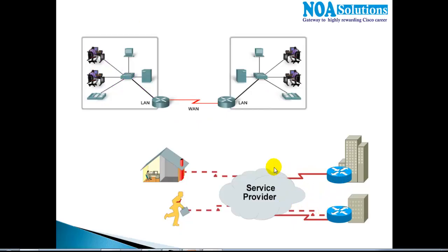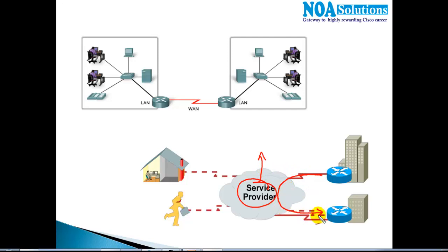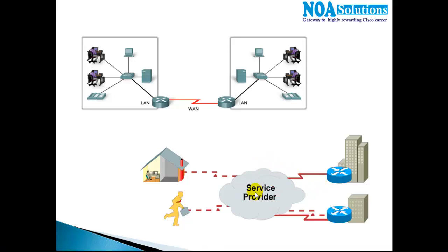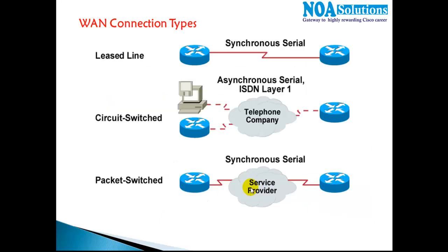To make that possible, we need to contact the local service provider. We need to contact a service provider who can give us connectivity. The cable required to connect between your branch offices has to be provided by the service provider, because we cannot lay our own cable from one location to another — we need to take a line from the service provider.